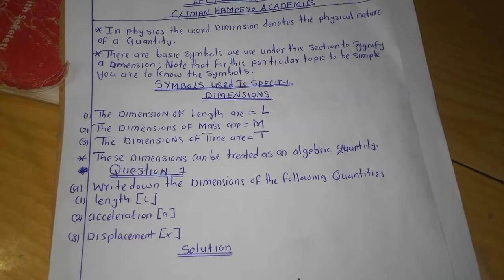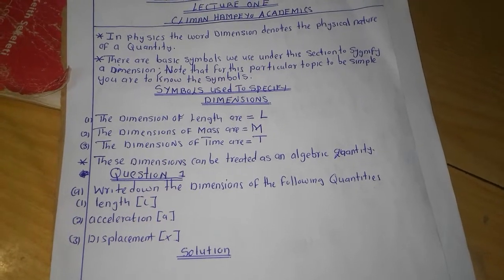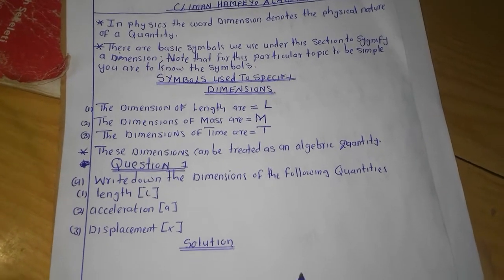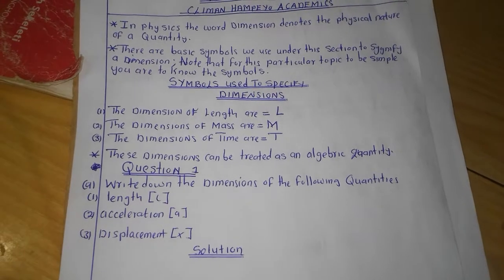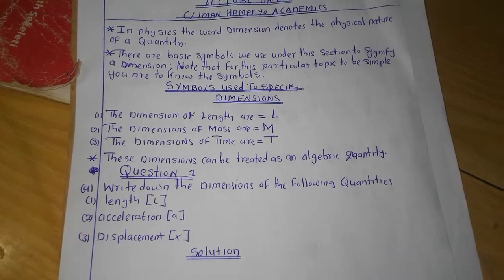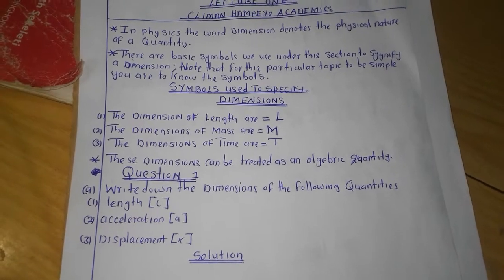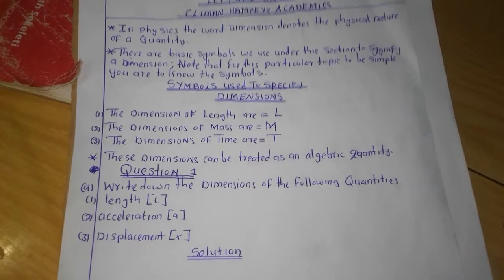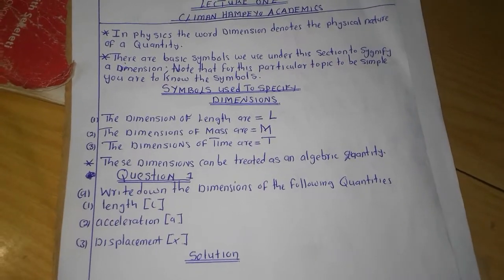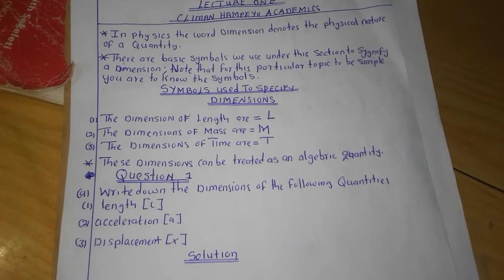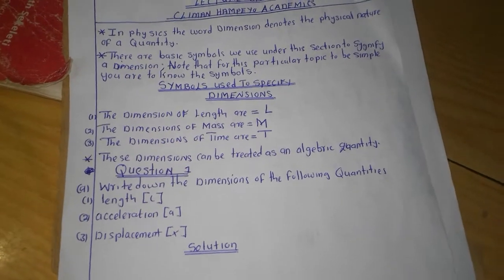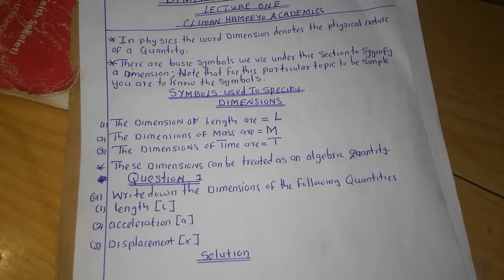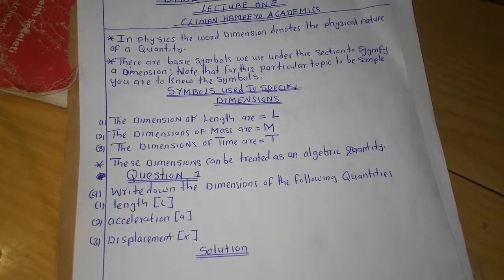These dimensions can be treated as algebraic quantities. What we simply mean is that we are able to write them in ratio form, and when we write them in ratio form we are able to prove whether our physics formula is true — whether that formula is consistent or not consistent. That is the importance of this particular topic. Now there's a question here: write down the dimensions of the following quantities.